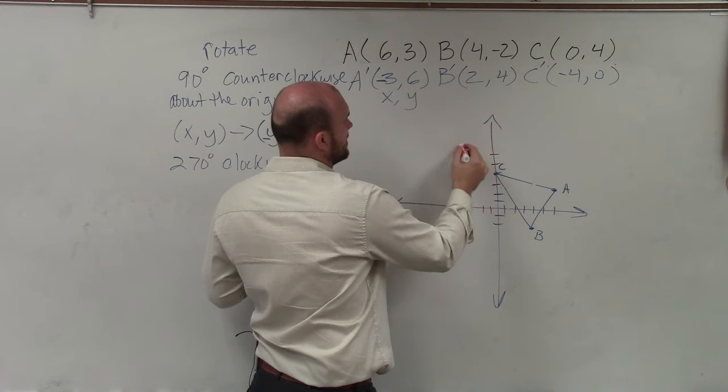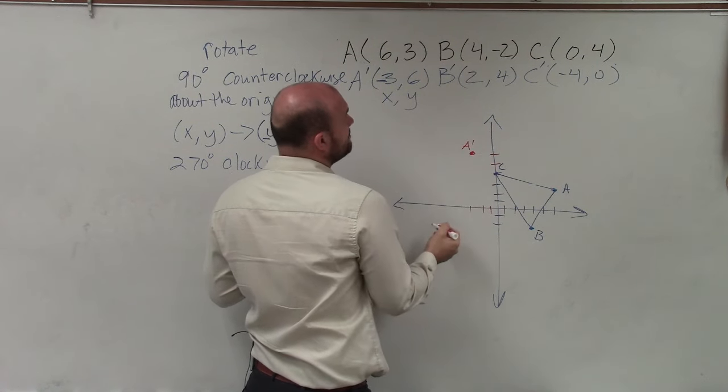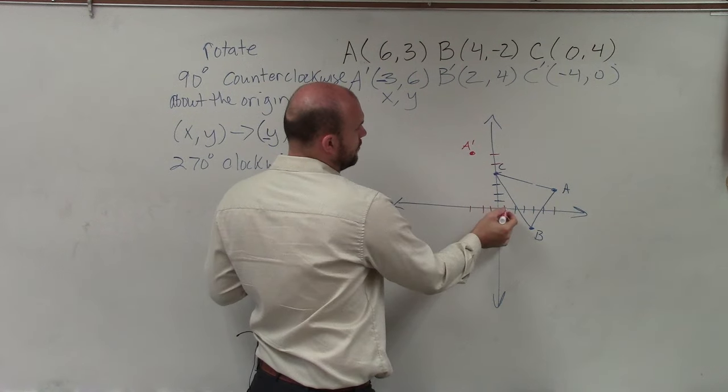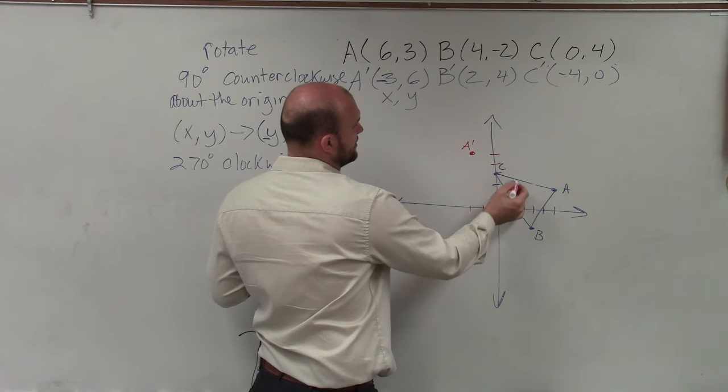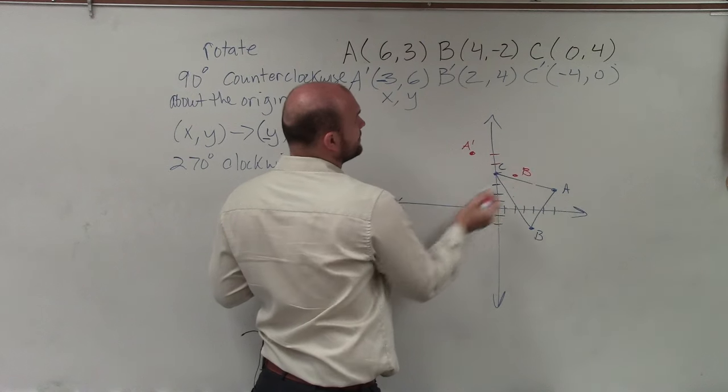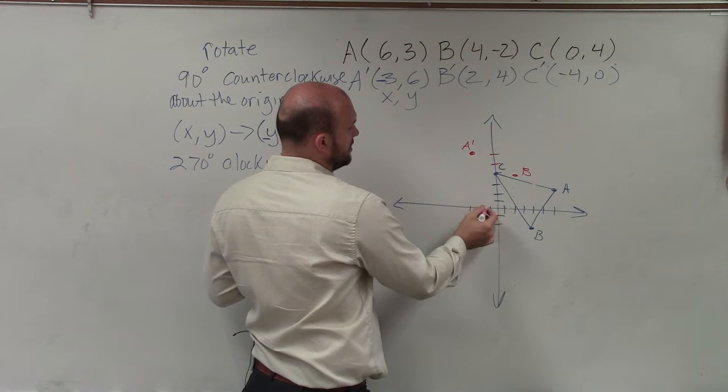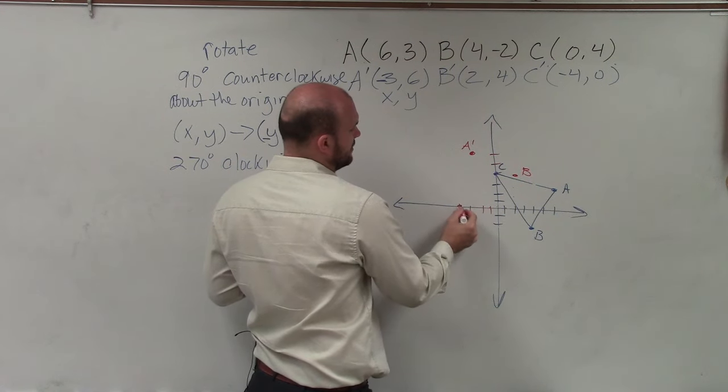B is at 2 comma 4, that's B prime. And C prime is at negative 4, 0.